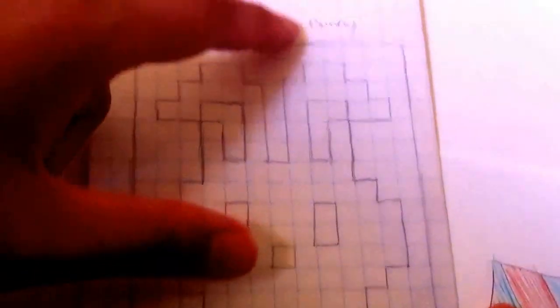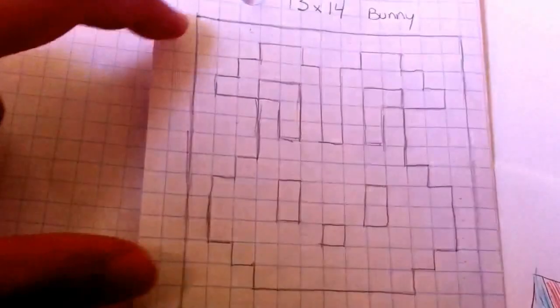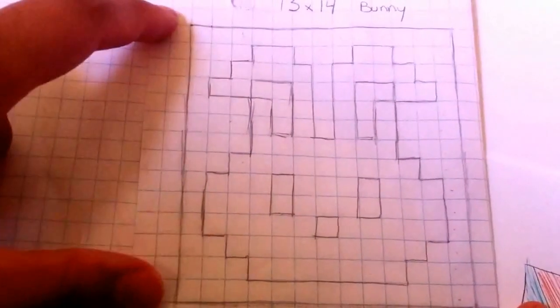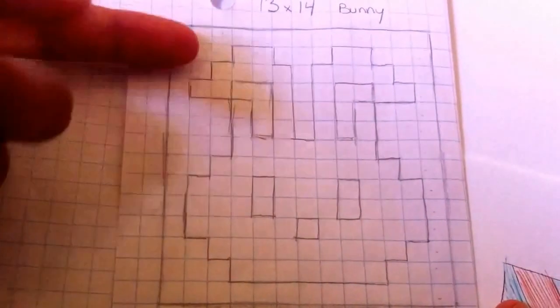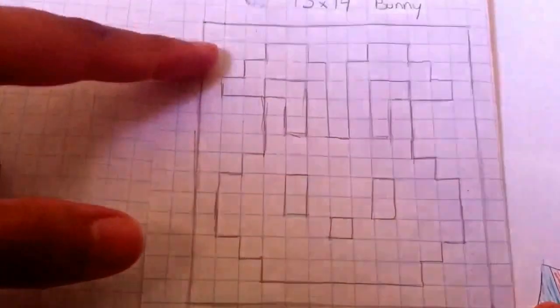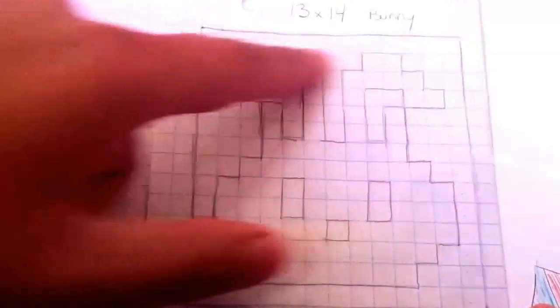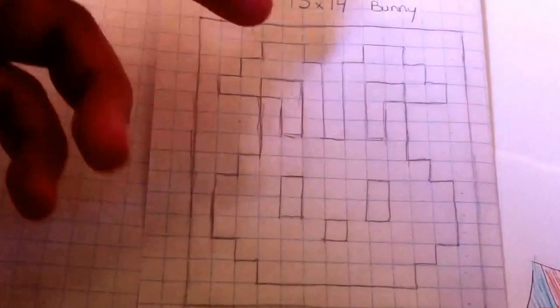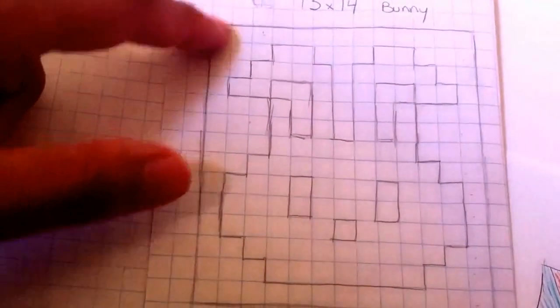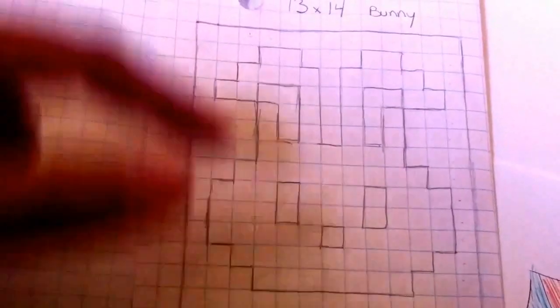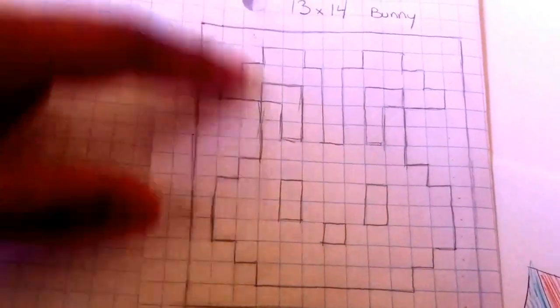For example, if you wanted 14 strings, and this one's a 13 by 14, if you wanted 14 strings, it will go this way, and each one of these will be a string. Or if you wanted 13 strings, each one of these will be a string, and each line will go down like this.